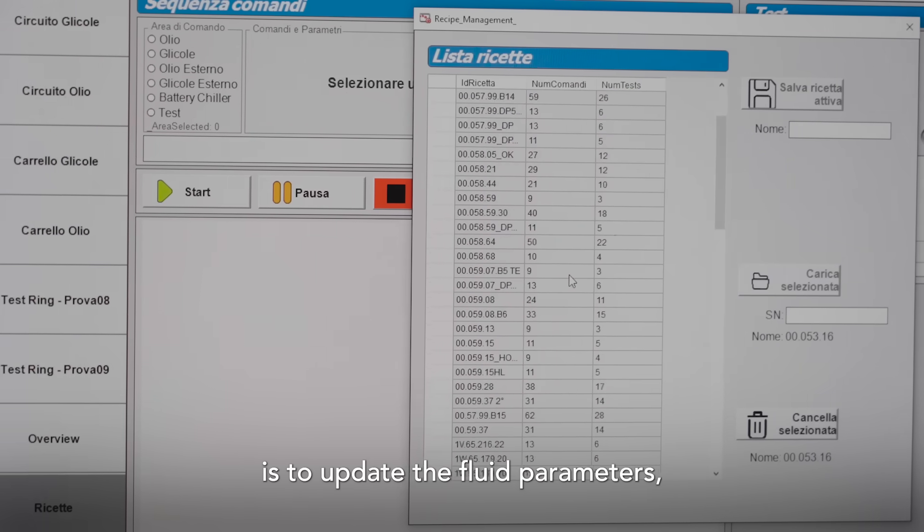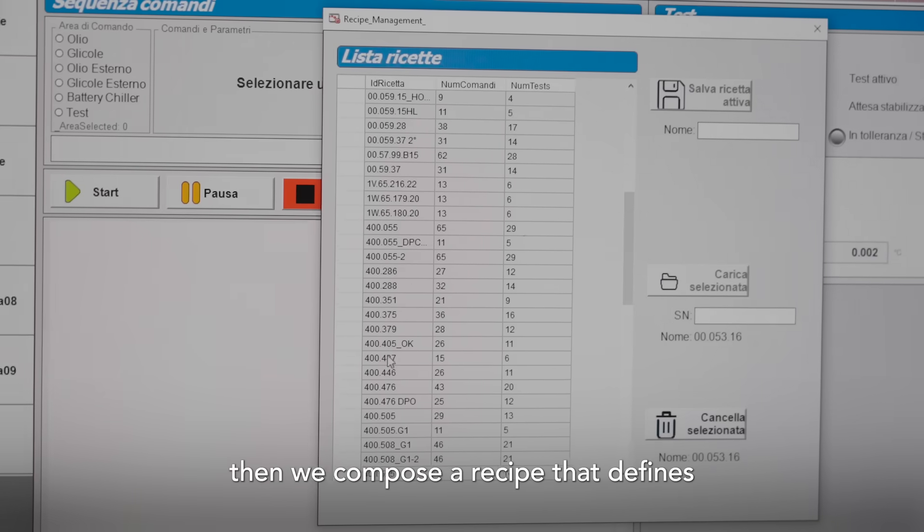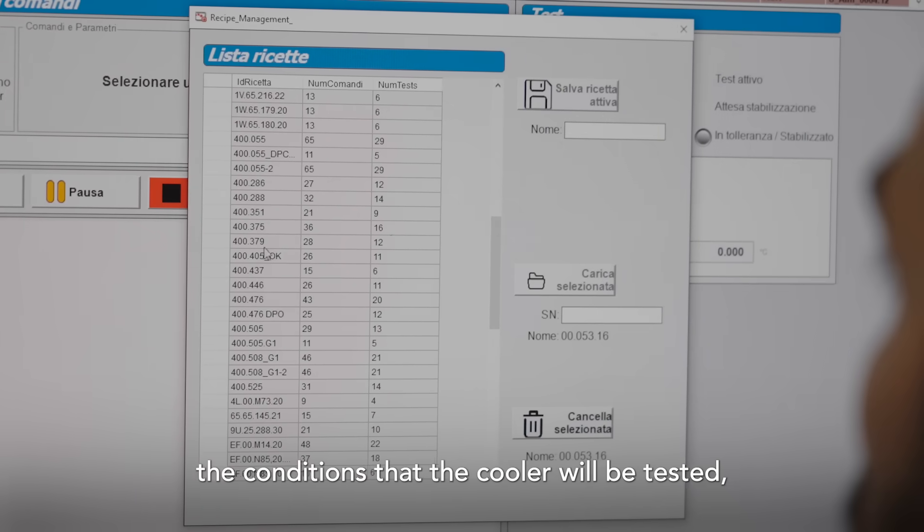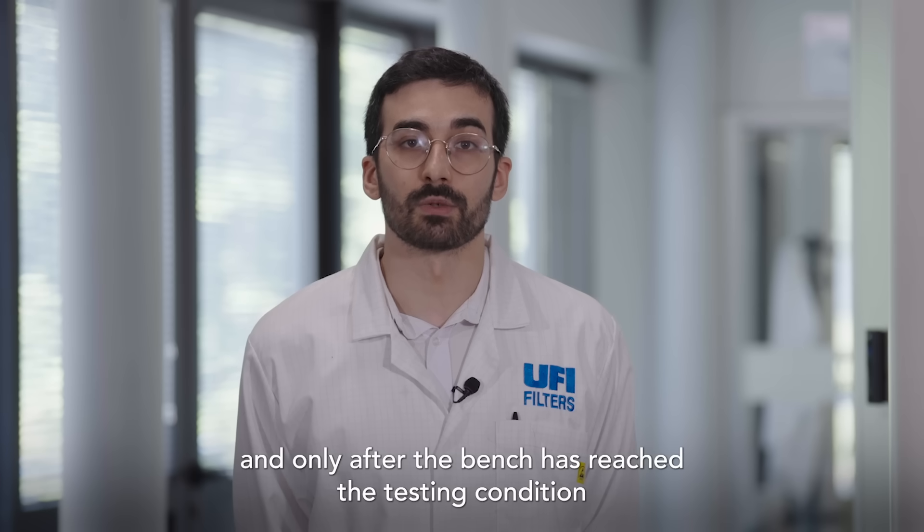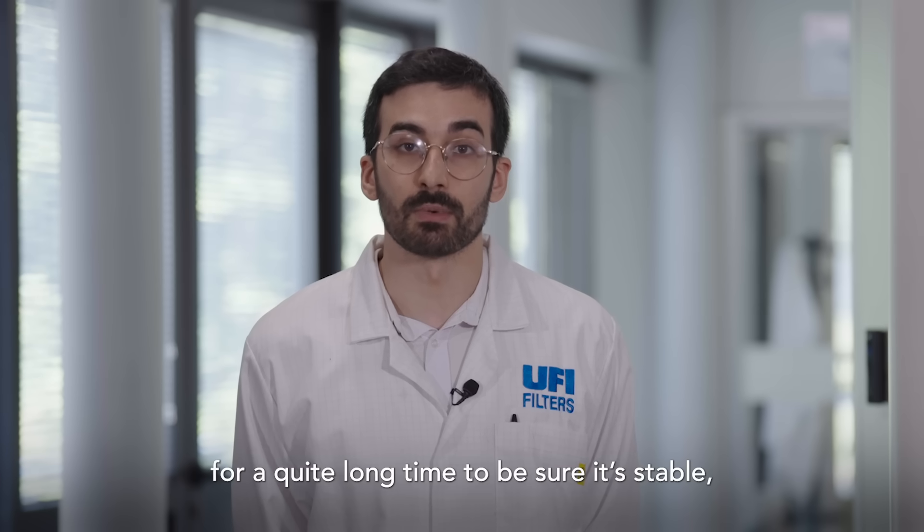When we test an oil cooler, the first thing we do is update the fluid parameters, then we compose recipes that define the conditions the cooler will be tested. Only after the bench has reached the testing condition for quite a long time to be sure it's stable, the test can start.